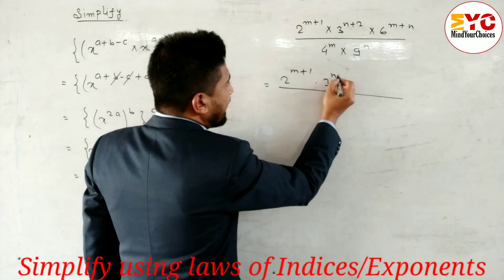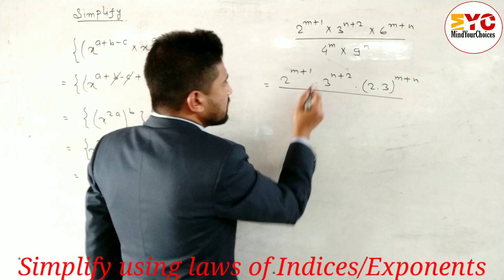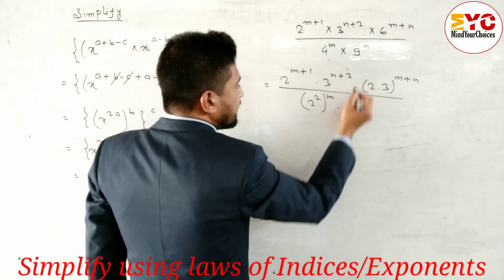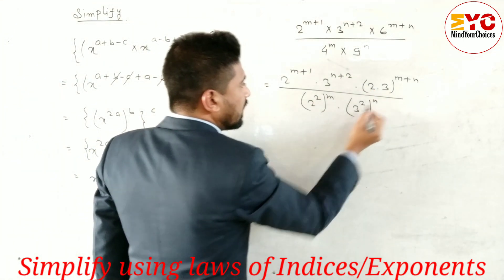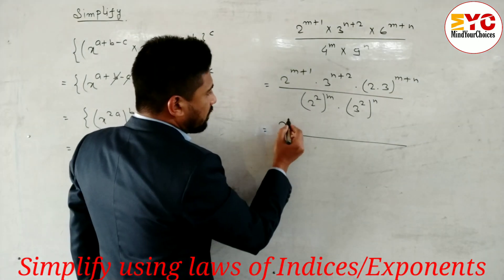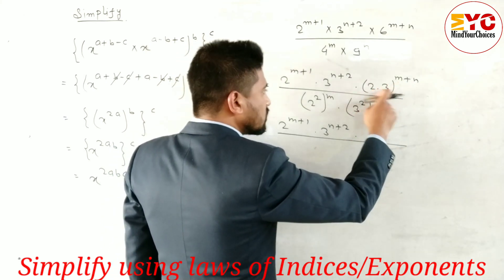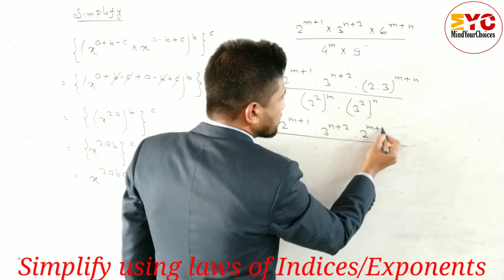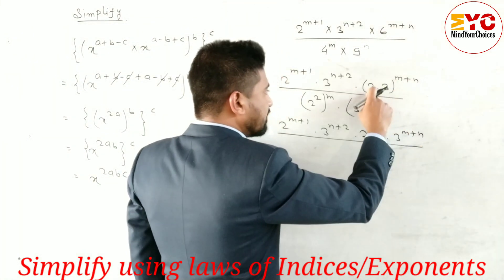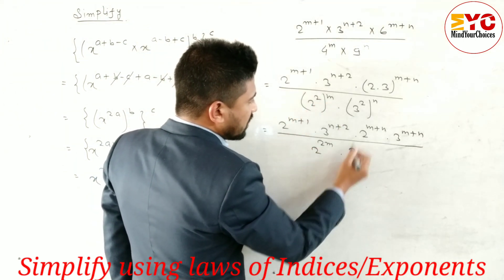So 2^(m+1) × 3^(n+2), and 6 means we can write (2 × 3)^(m+n). Similarly 4 means 2², so we write (2²)^m. And 9 is 3², so we write (3²)^n. Expanding using the power rule: 2^(m+1) × 3^(n+2), and this power (m+n) applies to both 2 and 3. We also get 2^(2m) × 3^(2n).